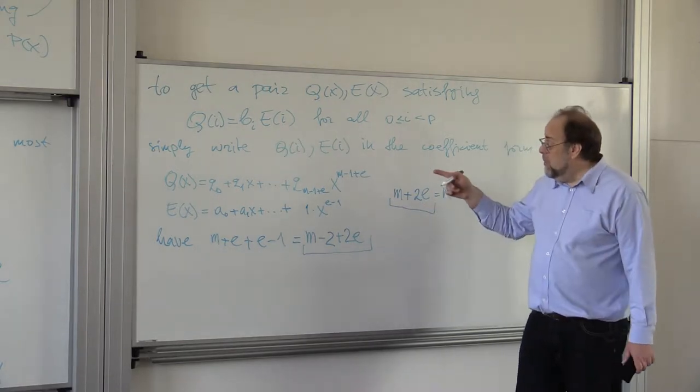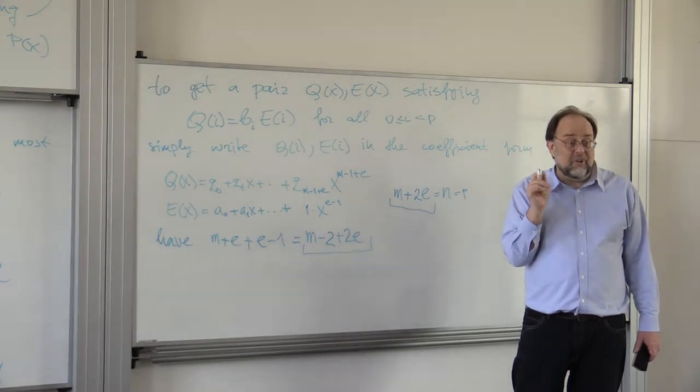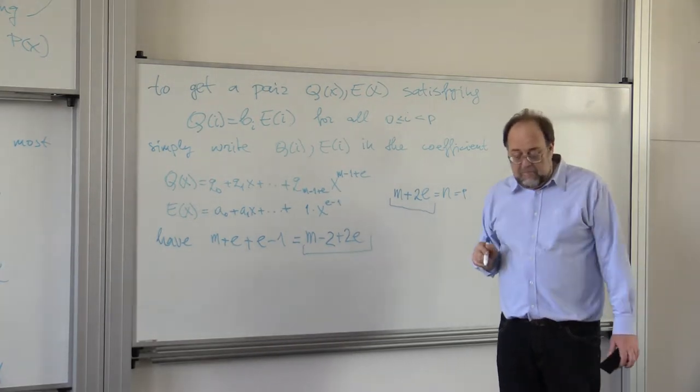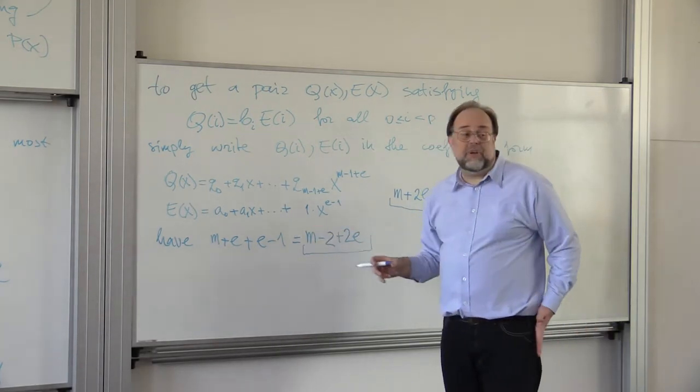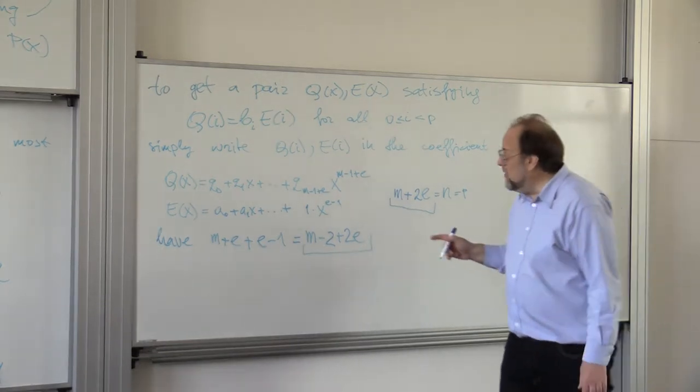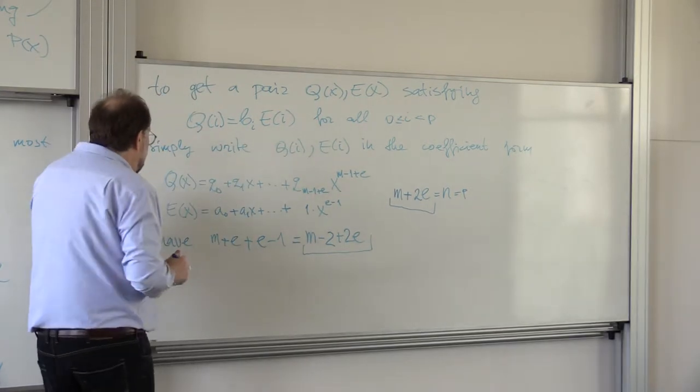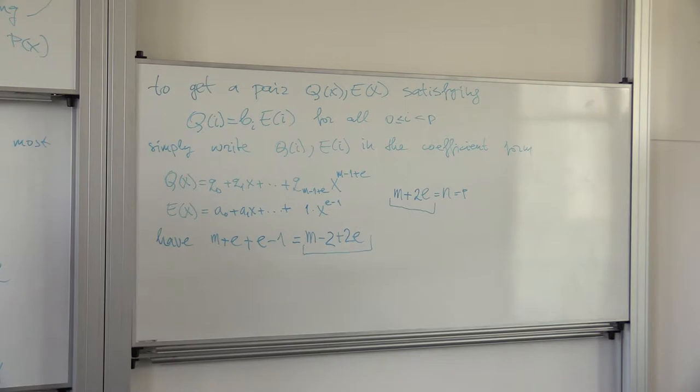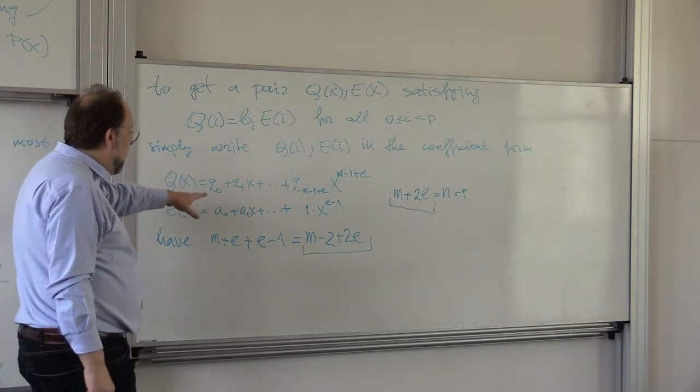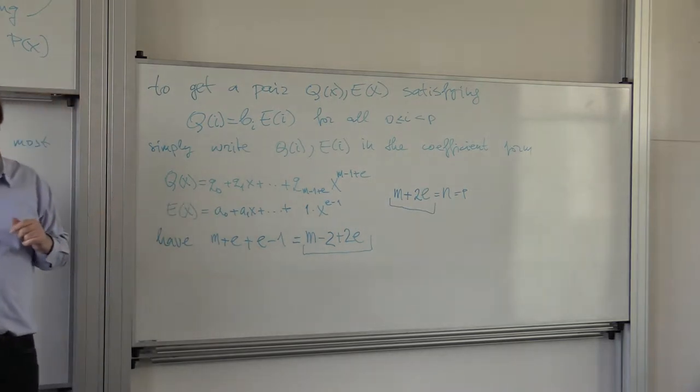Because there will be multiple solutions for e, depending on how many errors you actually have. This system will be, in general, underdetermined, but because of our theorem, any solution that has this property will produce exactly the same quotient polynomial p.